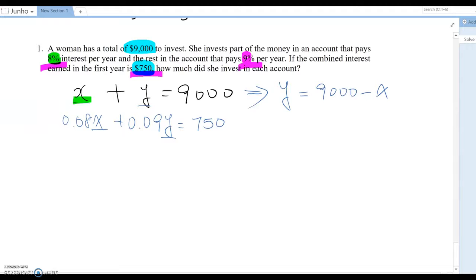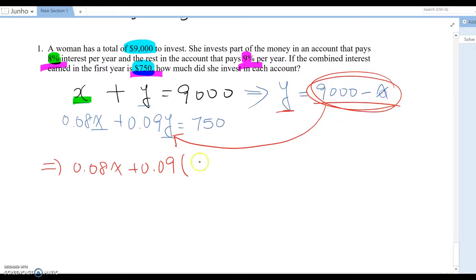Then now I can replace Y as this amount, which means you input this amount into here. Then this equation become 0.08X plus 0.09Y, but we know Y become this one. So 9,000 minus X equal to 750.